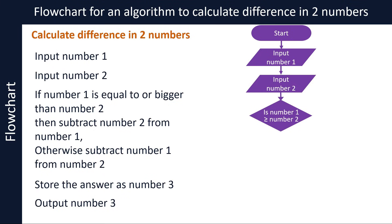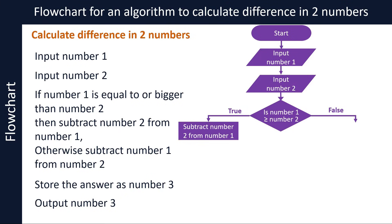If the answer is yes — that is, if number 1 is equal to or bigger than number 2 — then we take the path along the arrow labelled TRUE. If the answer is no, we take the path labelled FALSE. Along the TRUE path, we draw a process symbol to subtract number 2 from number 1. Along the FALSE path, we draw a process symbol to subtract number 1 from number 2. At any point, the computer will only take one of the two routes.